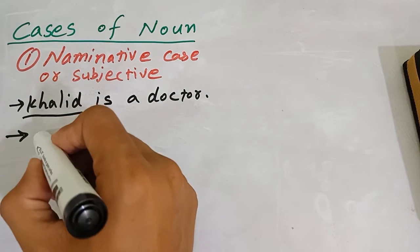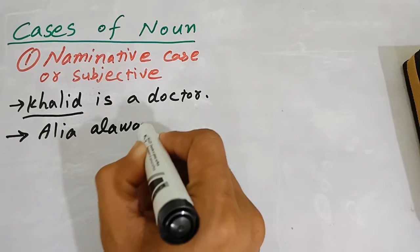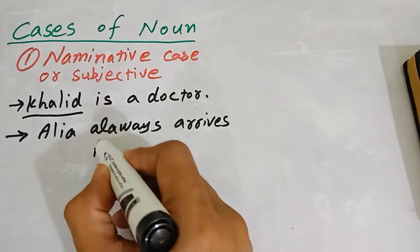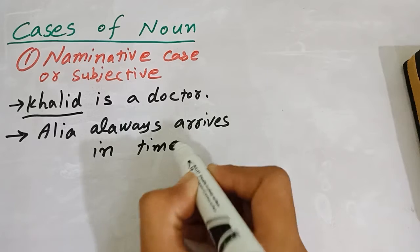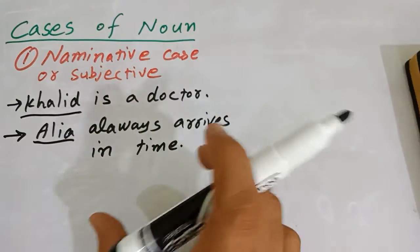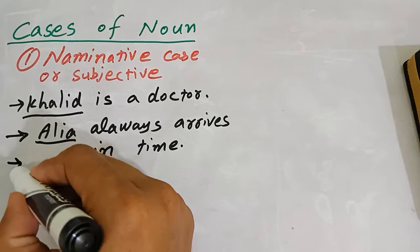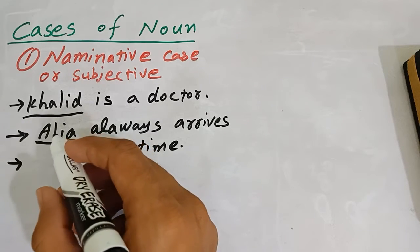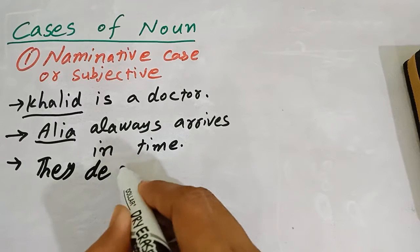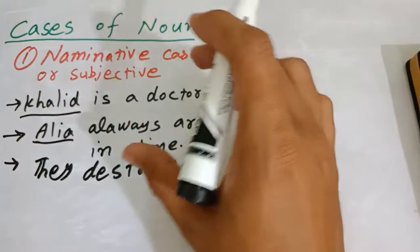Second example: Aliyah always arrives on time. So Aliyah is the nominative case, or subjective case. Third example: They destroyed the evidence. Who destroyed the evidence? They. So 'they' is the nominative case or subjective case of the noun.